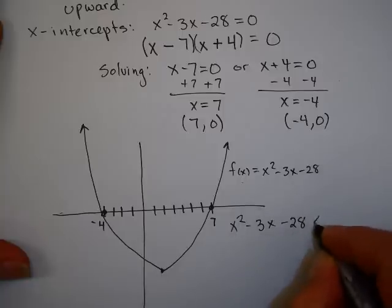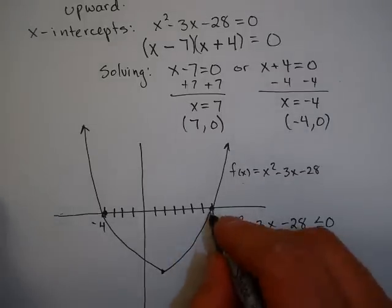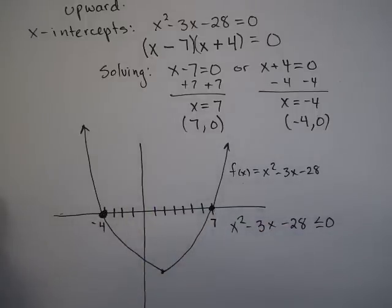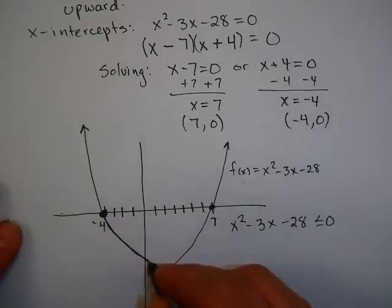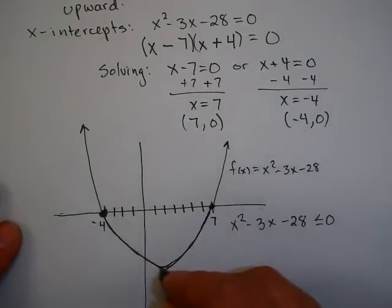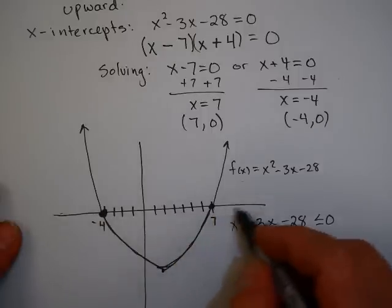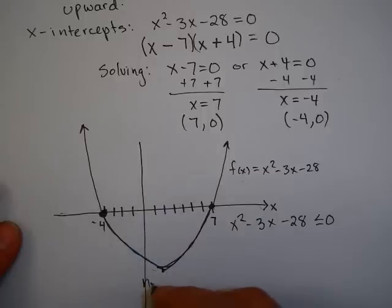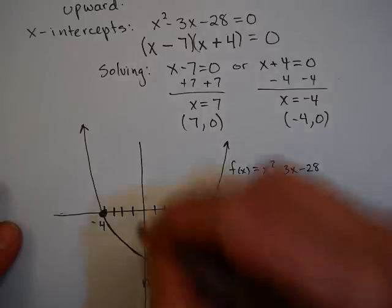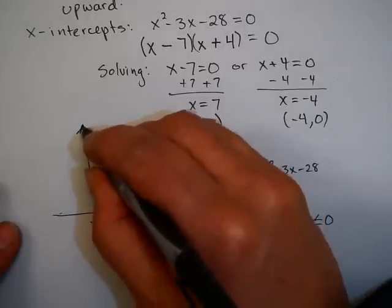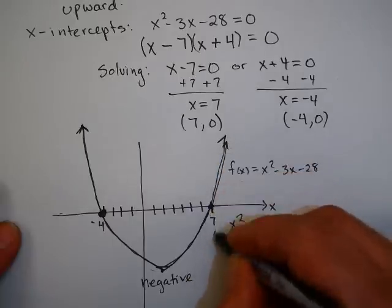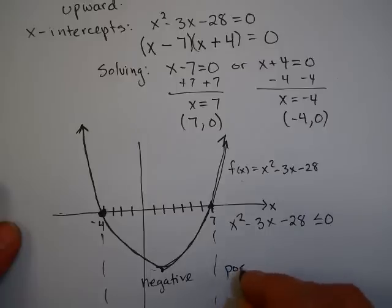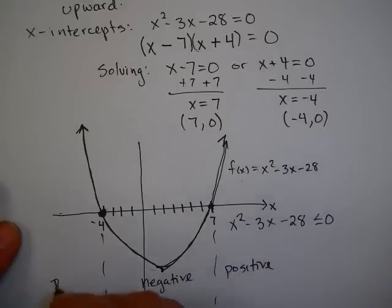Now, the question that we started with is, when is x² - 3x - 28 less than or equal to 0? Well, we know that x² - 3x - 28 equals 0 at negative 4 and at 7. In between negative 4 and 7, in this case, the graph is below the x-axis. If the x-axis is 0, then this is where the graph is negative. It's negative right here. And the graph is above the axis, off in these directions. So from negative 4 and down, and from 7 and up, it is positive.